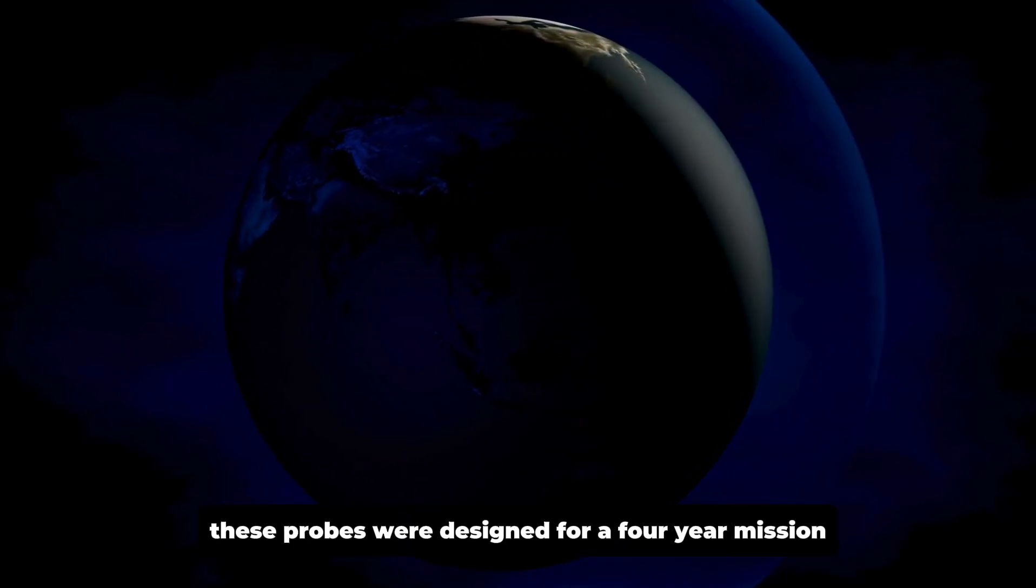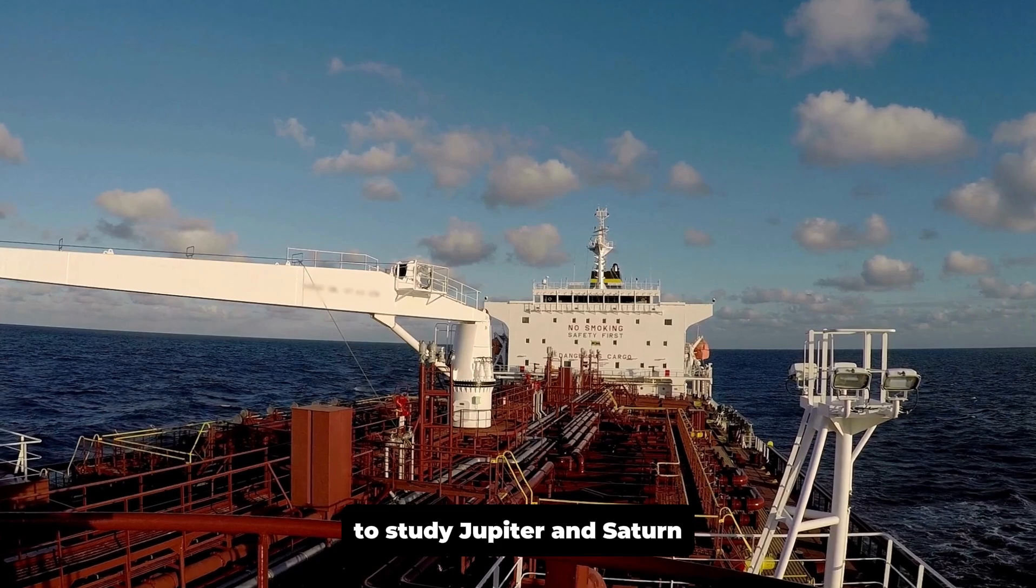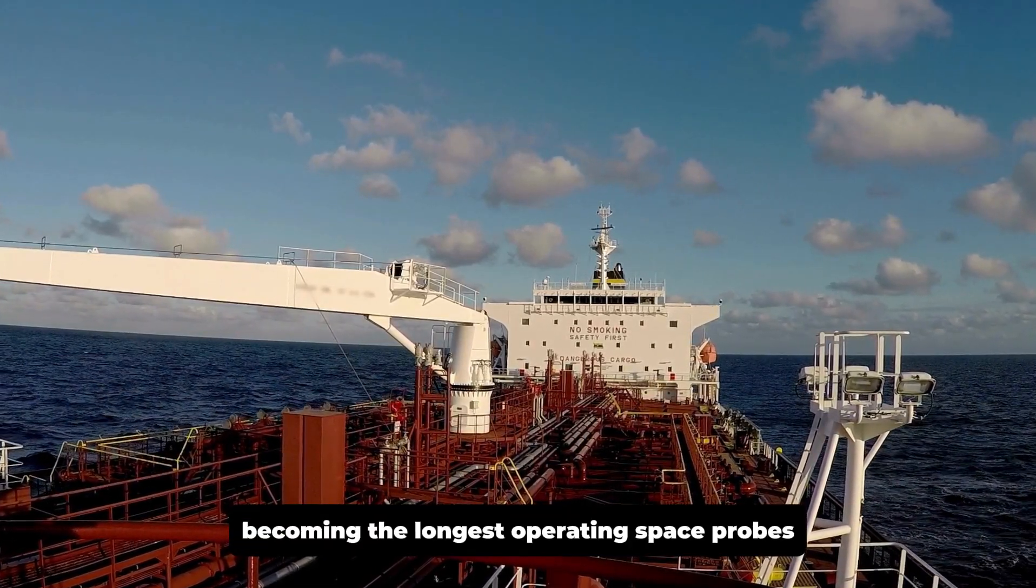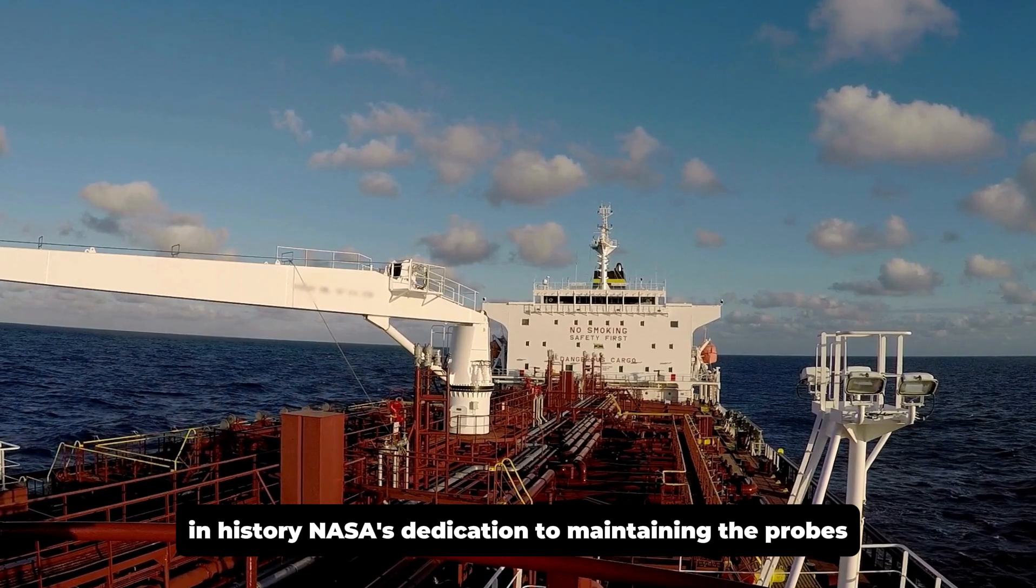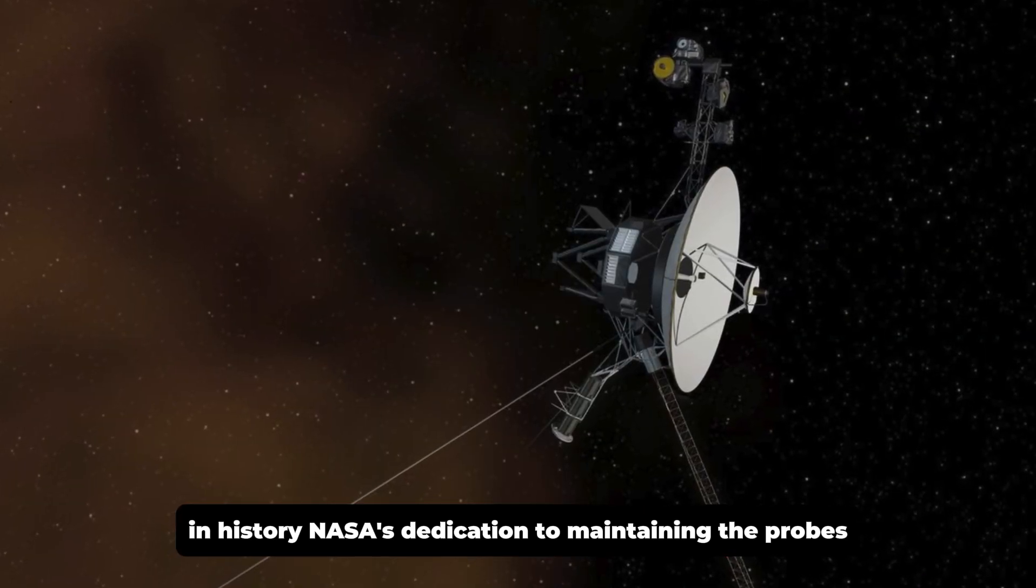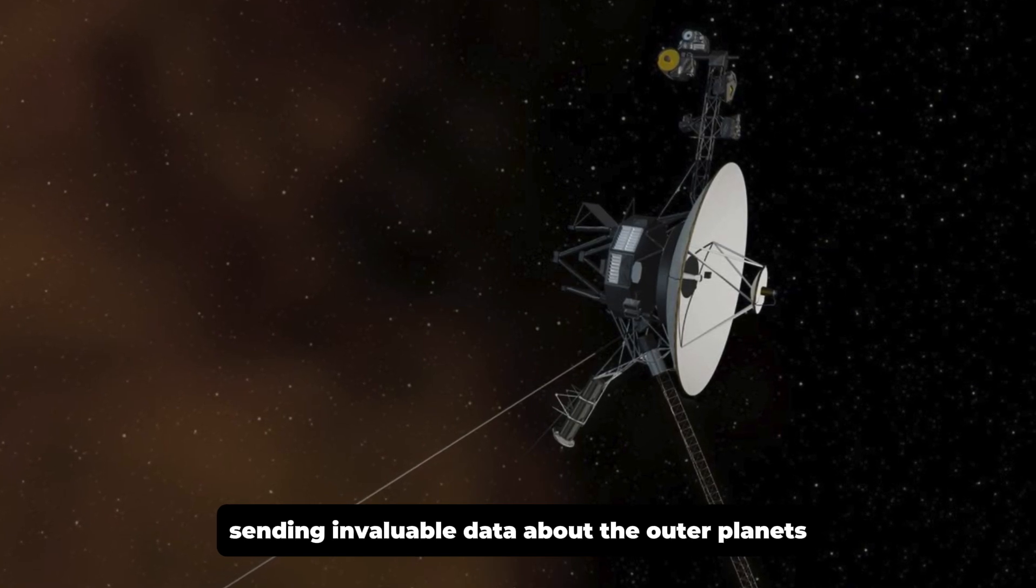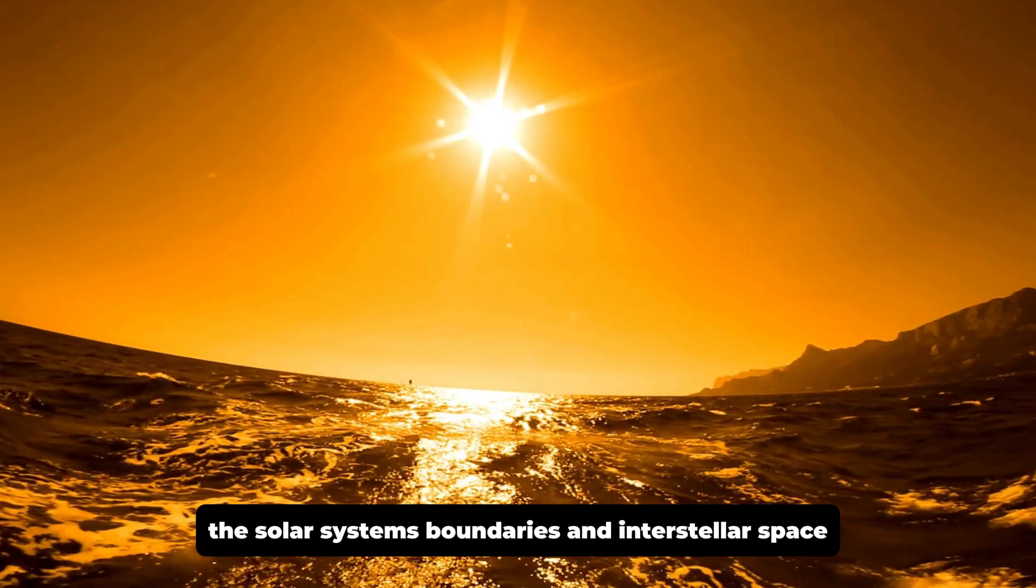Initially, these probes were designed for a four-year mission to study Jupiter and Saturn, but they have far surpassed that, becoming the longest operating space probes in history. NASA's dedication to maintaining the probes in working order has allowed them to continue sending invaluable data about the outer planets, the solar system's boundaries, and interstellar space.